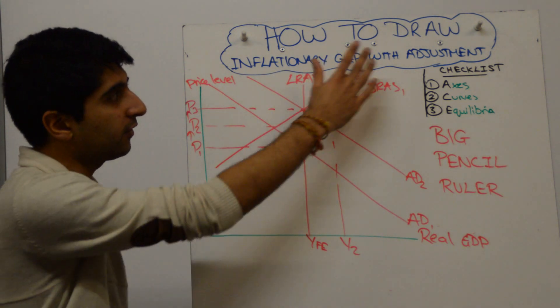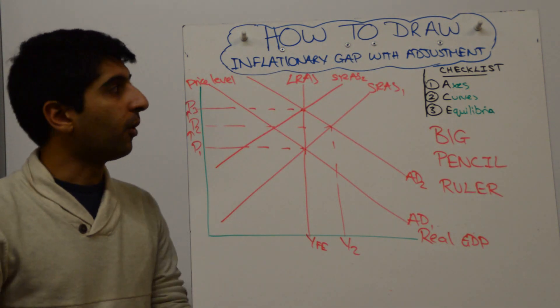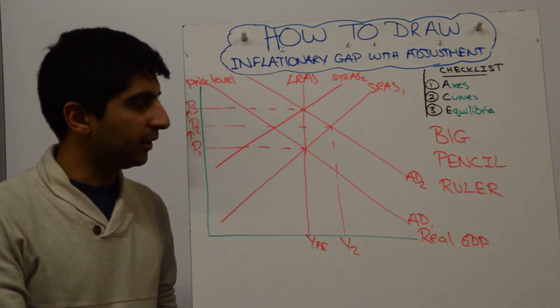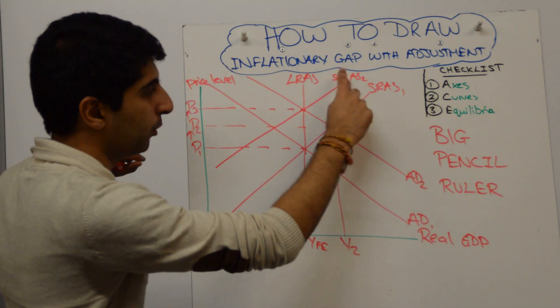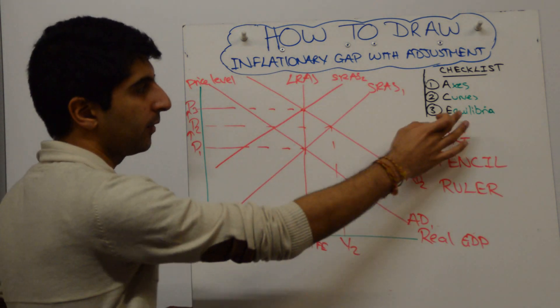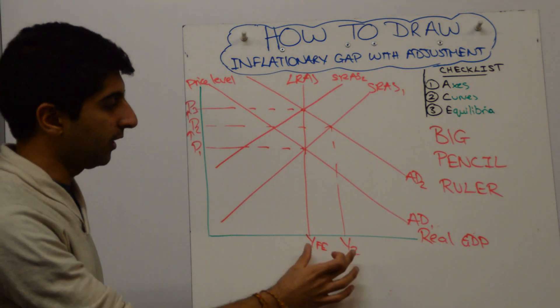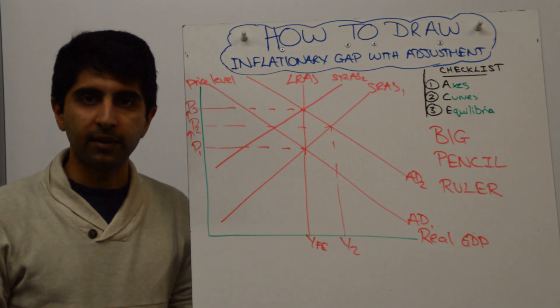That's how you do it. The adjustment in the long run from an inflationary gap using the classical model. Have we labeled our axis? Yes, we have. Have we labeled all of our curves? Yes, we have lots to label here. Have we labeled the equilibrium? Yes, we have with all the varying price levels as well.